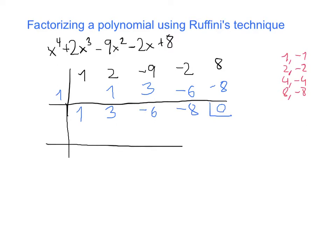Let's carry on to find another root. I repeat the little square, and I'm going to try now with 2. 1 times 2 gives me 2. 2 plus 3 is 5. 5 times 2 is 10. 10 plus minus 6 is 4. 4 times 2 is 8. 8 plus minus 8 is 0. And that means that 2 is another root of the polynomial.